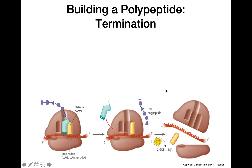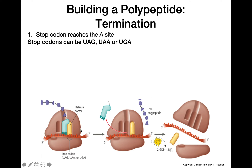Lastly, we have termination. A stop codon is going to reach the A site. Our stop codons are either UAG, UAA, or UGA. A helpful mnemonic to remember them: UAG is 'you are annoying,' UGA is 'you go away,' and UAA is 'you are gone.' That's how to remember all your stop codons.